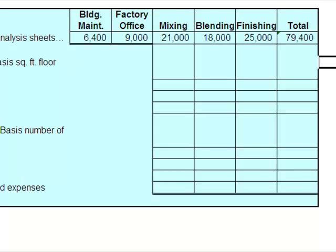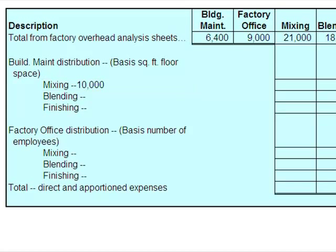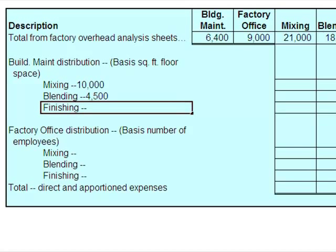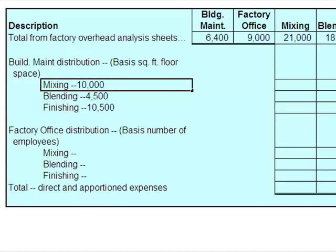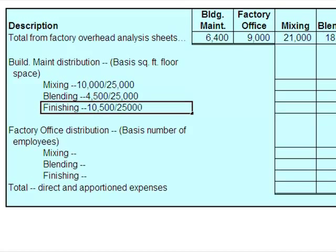What is the cost driver for building maintenance? It tells me we allocate on the basis of floor space occupied by the other departments. Mixing has 10,000 square feet. We're going to allocate out 25,000 square feet total because mixing has 10,000, blending has 4,500 square feet, and finishing has 10,500 square feet. Remember, I'm not going to allocate back to myself — this is a direct method. So mixing gets 10,000 out of 25,000, blending gets 4,500 out of 25,000, and finishing gets 10,500 out of 25,000.